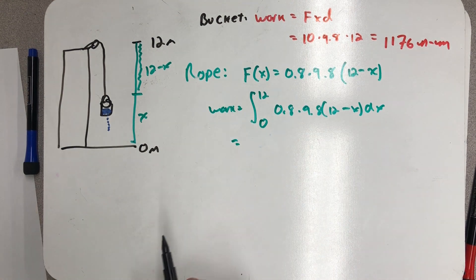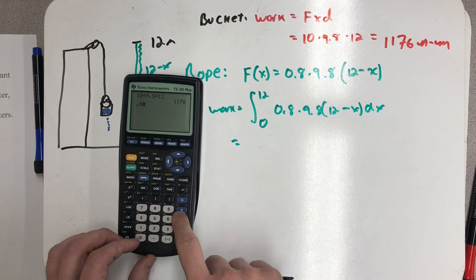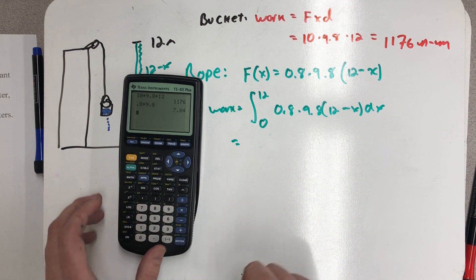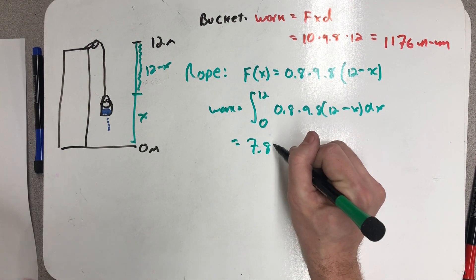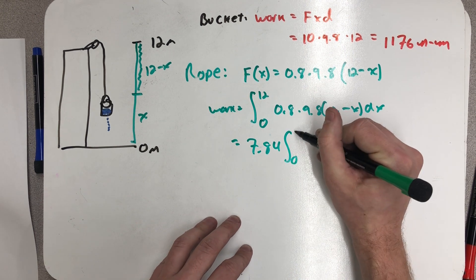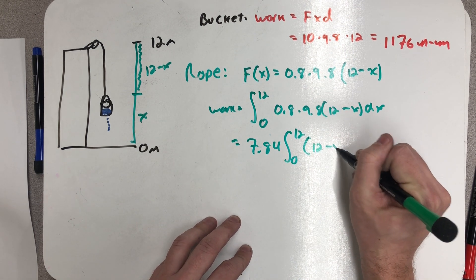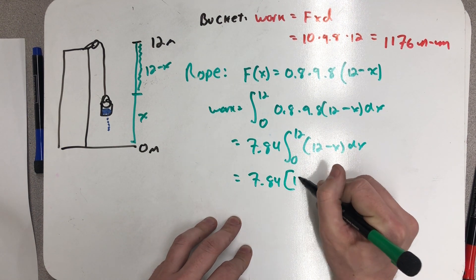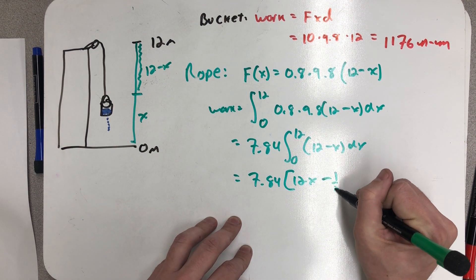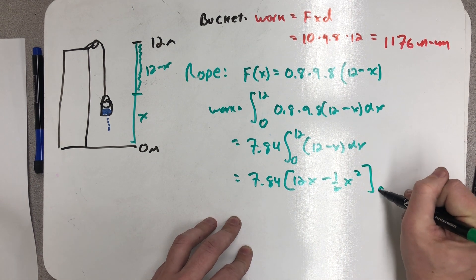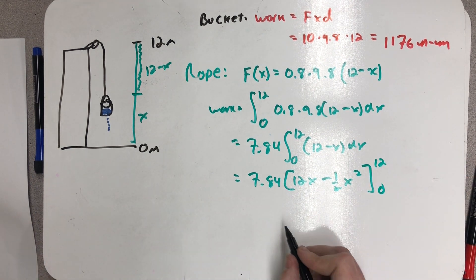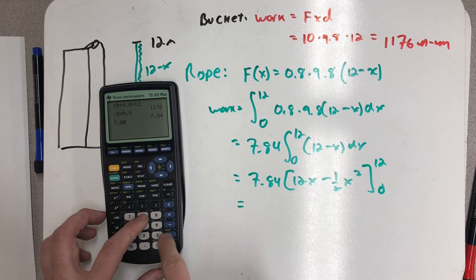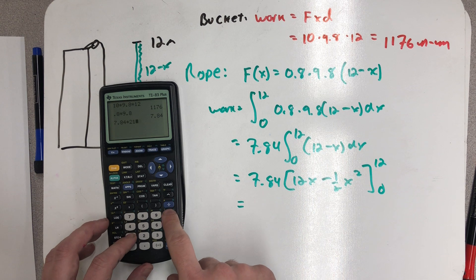All right, I can factor out the 0.8 times 9.8. Let's go on and find out what that's equal to: 7.84. So now I'm integrating from 0 to 12 of 12 minus x times 7.84. Find a nice happy anti-derivative.